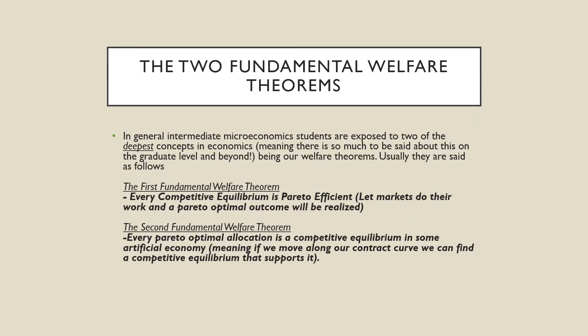So let's talk about our Fundamental Welfare Theorems. These are the deepest concepts in economics, meaning that people on the graduate level and beyond go in so much depth about them. They are usually stated as follows on the undergraduate level. The first welfare theorem is that every competitive equilibrium is Pareto-efficient — this means let markets do their work and a Pareto-efficient allocation will be realized, meaning we'll end up somewhere on that red contract curve. The second welfare theorem is that every Pareto-optimal allocation is a competitive equilibrium in some artificial economy, meaning that if we move along our contract curve, we can find a competitive equilibrium that supports it.